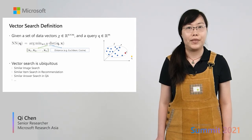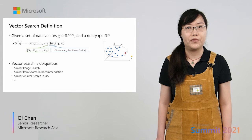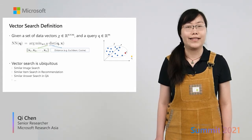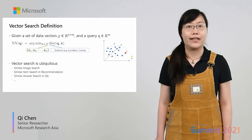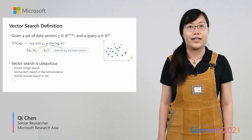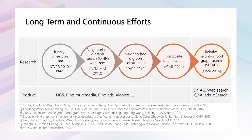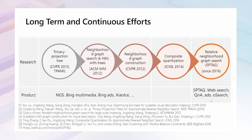Vector search is ubiquitous and can be widely used in various kinds of applications, such as similar image search, similar item search in recommendation, and similar answer search in Q&A, and so on. Due to the importance of vector search, we have done research in this area for around 10 years, from improving KD-trees and then inventing nearest neighborhood graph-based solutions, even before the popularization of deep learning.